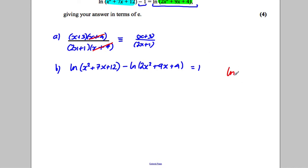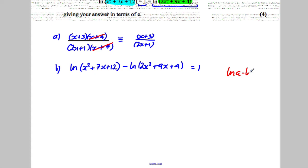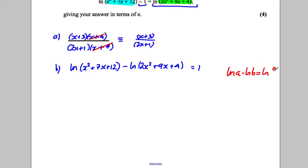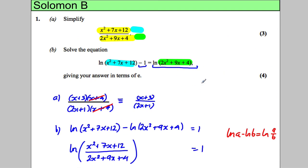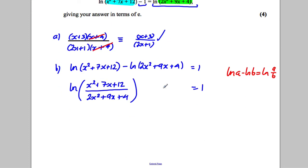Log a take away log B is log a divided by B, so now I can write this as a combined log. The natural logarithm of x squared add 7x add 12 divided by 2x squared add 9x add 4 would be 1.